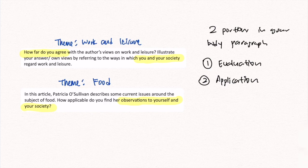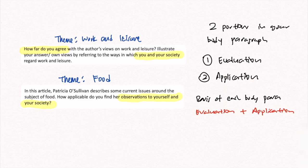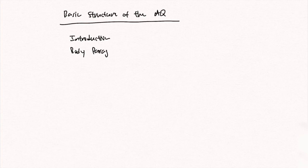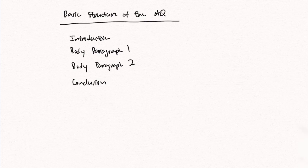Both evaluation and application will form the basis of each body paragraph. In some questions you focus more on evaluation, in others more on application, but both must be present in all body paragraphs for all types of AQ questions. A basic structure for the AQ is: introduction, first body paragraph, second body paragraph, and conclusion. Two body paragraphs is probably the sweet spot for most students — I recommend two for the interest of time. If they are well-crafted and well-written, you can still get a Band A. However, feel free to write three paragraphs if you have the time and energy.